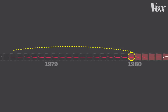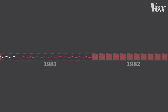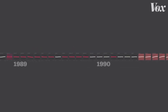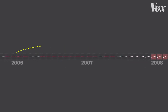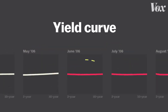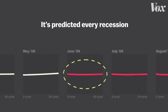It happened again a few months later. The line curved downward, then boom, another recession. And it happened again in 1988, again in 2000, and again in the mid-2000s. This line is called the yield curve, and it's predicted every recession in the past half century.